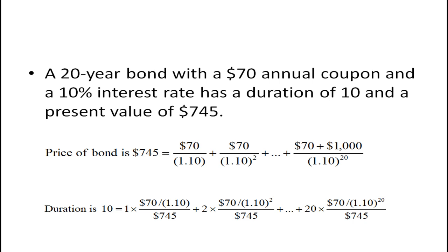How are you going to do this with a coupon bond? You're going to have to pick a bond that has a longer maturity than when the liability is due. In this example — taken from a textbook by Robert Haugen on investment analysis and portfolio management — you have to pick a bond with a 20-year maturity, a $70 annual coupon, and a 10% interest rate. If you work it out, it has a duration of 10 and a present value (price) of $745.